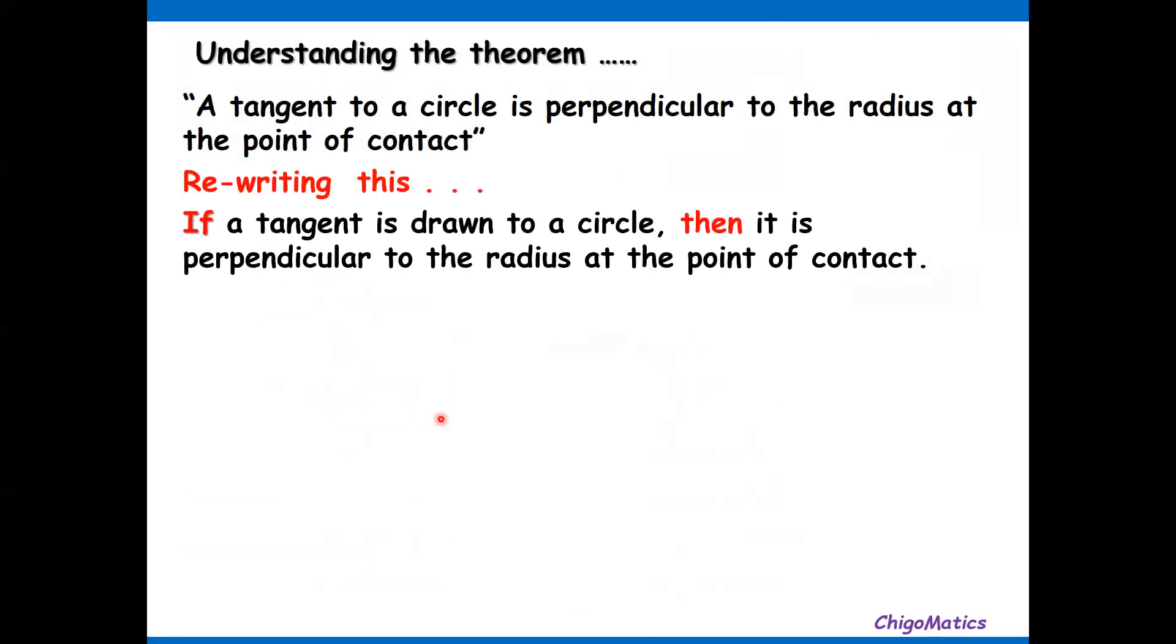Understanding this theorem, we write it in if-then form to have the hypothesis and conclusion. If a tangent is drawn to a circle, then it is perpendicular to the radius at the point of contact.